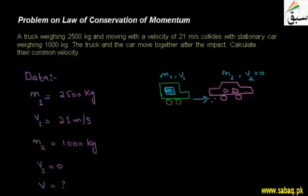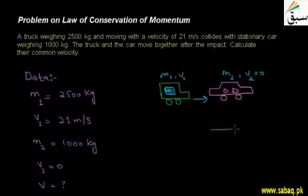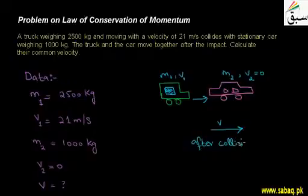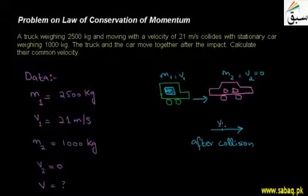What will the truck do? It will strike the car. After the strike, these two are in contact and move with a common velocity, which we have given the name V — that is, the velocity after the collision.